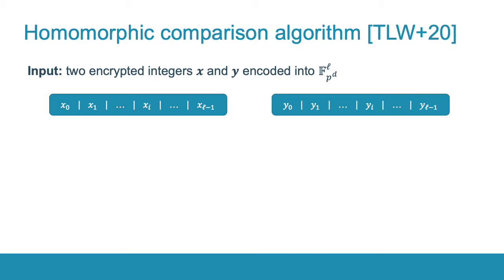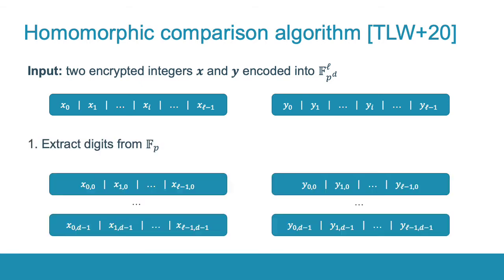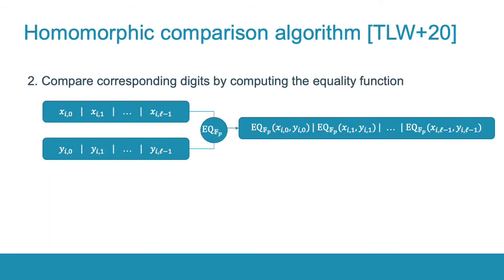We use the fastest algorithm in the literature from Tan et al. The input is two integers X and Y encoded as vectors of the finite field Fp^d. The first step is to extract the digits of these integers, namely the elements of the prime field Fp. This step is relatively cheap. Note that each output ciphertext contains the i-th coefficients of all the coordinates of the input vectors. In the second step, the corresponding pairs of digits are compared with the equality function. Note that one homomorphic evaluation of the equality function compares L pairs of digits simultaneously.